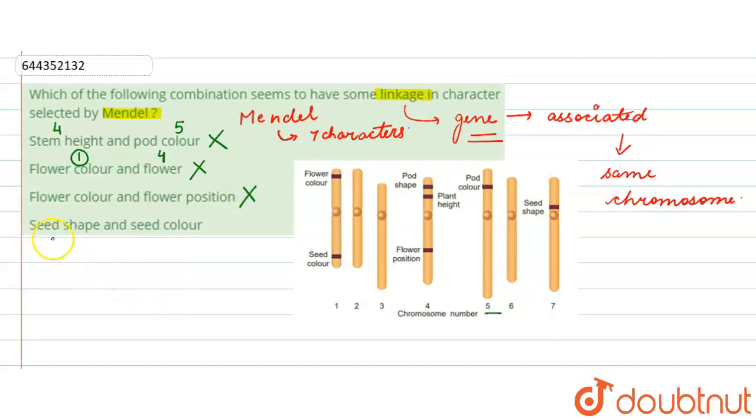The last one says seed shape and seed color. Seed shape is present on chromosome number 7, whereas seed color is present on chromosome number 1. Therefore, this option will also be wrong.